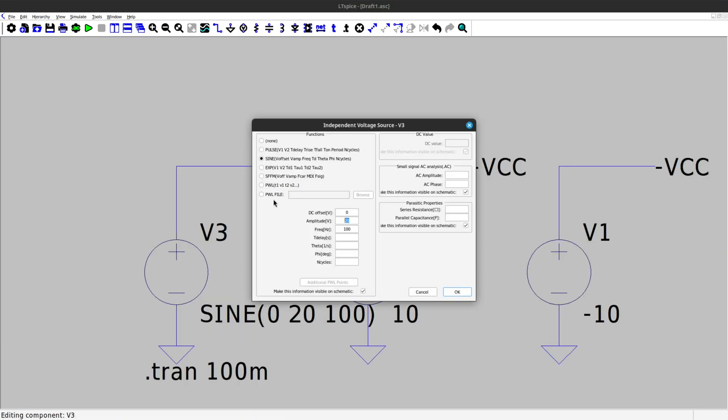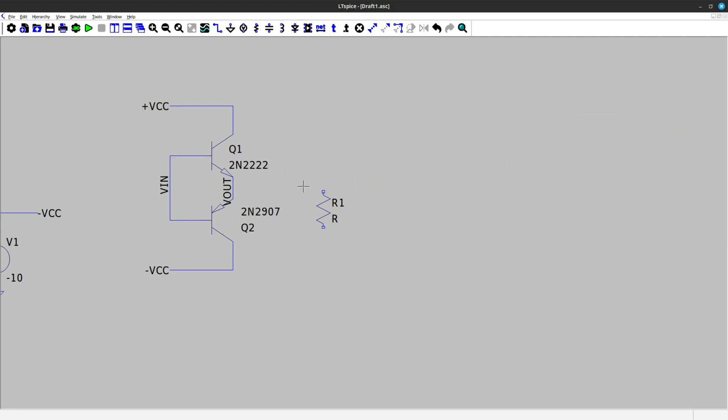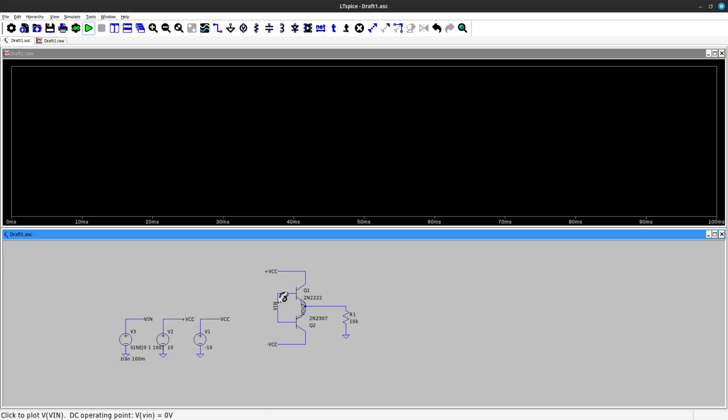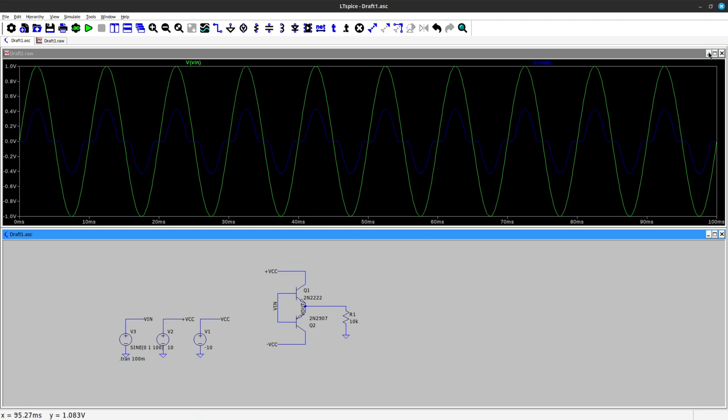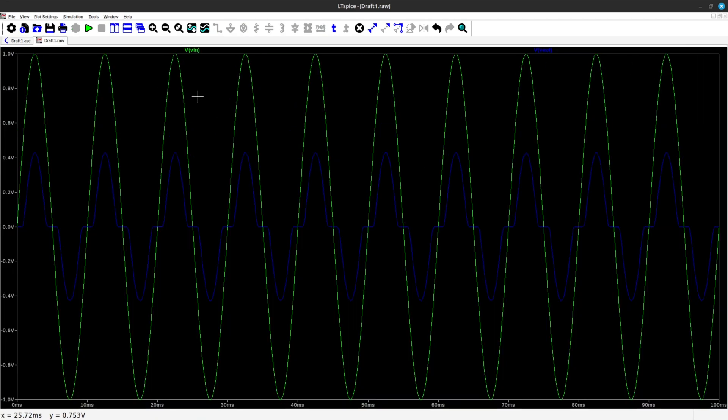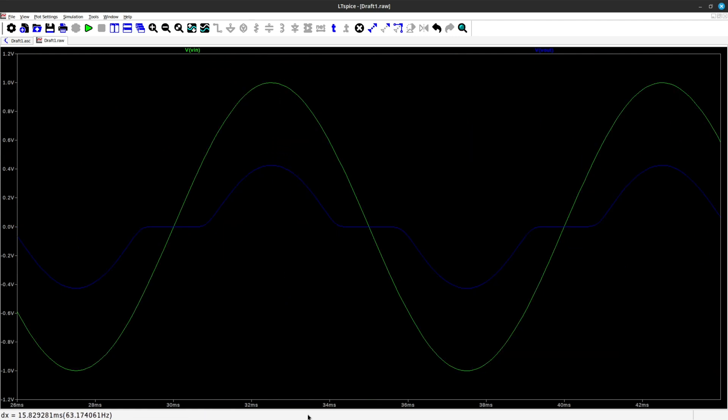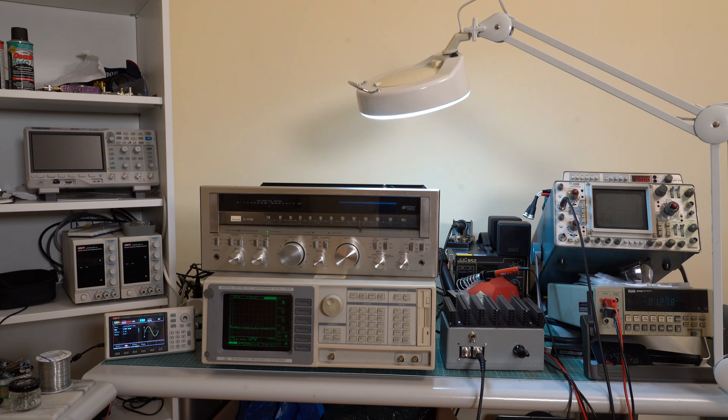Also, class AB amplifiers exhibit what we call crossover distortion. This has to do with the fact that transistors need a certain base emitter voltage in order to conduct. So it could happen that as the input signal swings through low values, none of the transistors will conduct, and above a certain threshold they would suddenly start conducting, creating distortion. Not only that, but transistors also exhibit non-linearity when transitioning from cut-off into the active region. Ok, enough boring theory for today, so let's see how to observe all these in practice.